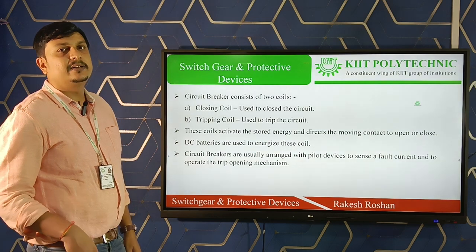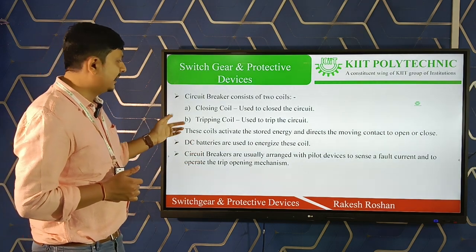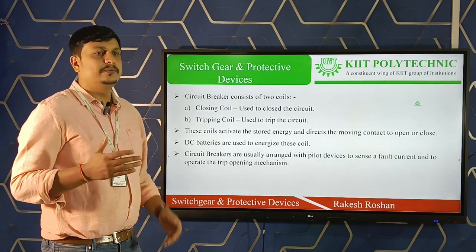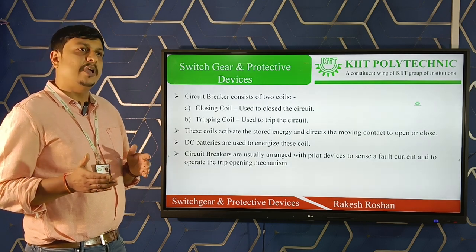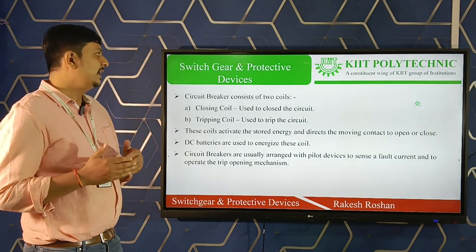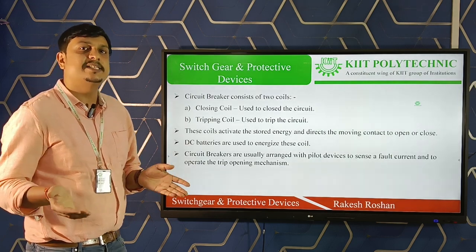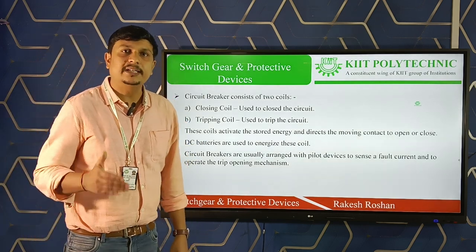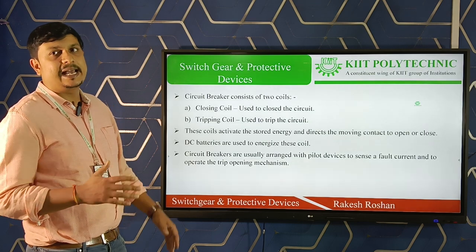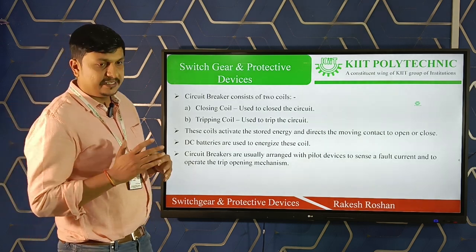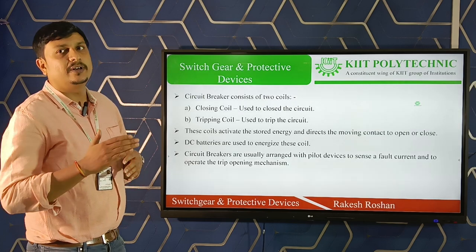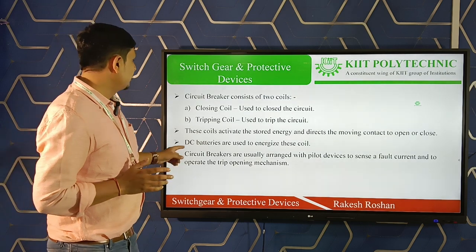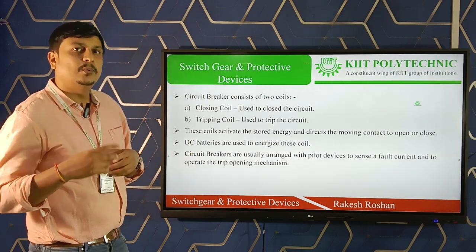A circuit breaker consists of two coils: a closing coil and a tripping coil. The closing coil is used to close the circuit once the fault is over — to make the circuit on again. The tripping coil is energized when a fault occurs and actuates the moving contact to separate from the fixed contact. DC batteries are used to energize both coils.